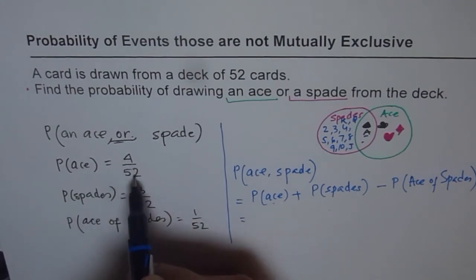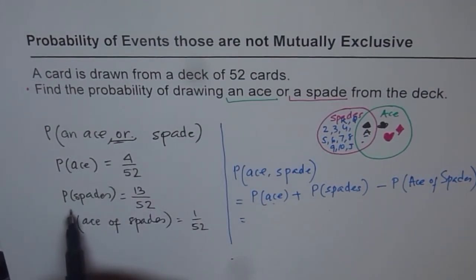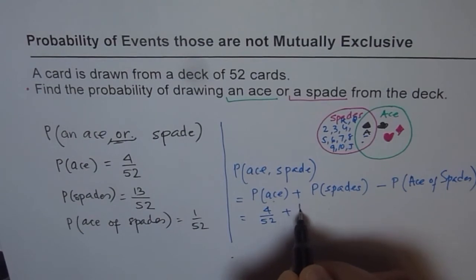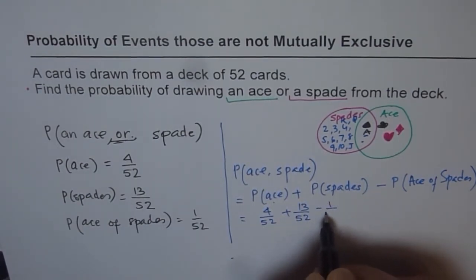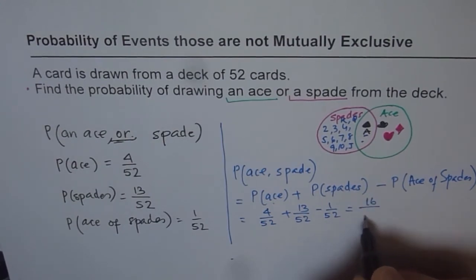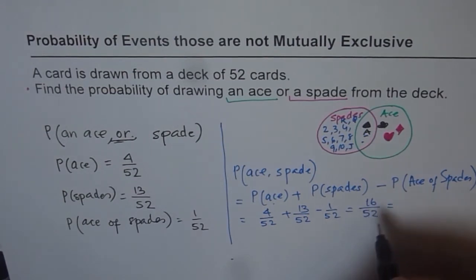So probability of getting ace is 4 over 52, of getting spades is 13 over 52 and taking away ace of spades is 1 over 52. So we can write this as 4 over 52 plus 13 over 52 take away 1 over 52. So that is 4 plus 13 is 17 minus 1, 16 over 52 is our answer. So we can divide both by 4 and then write this as 4 over 13.